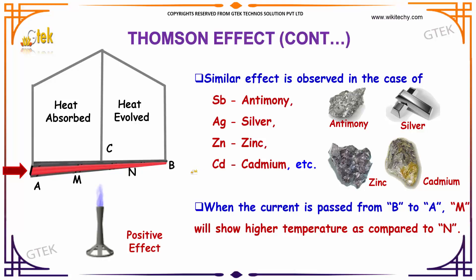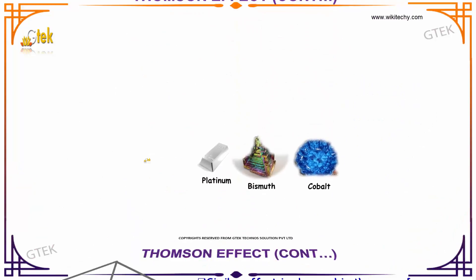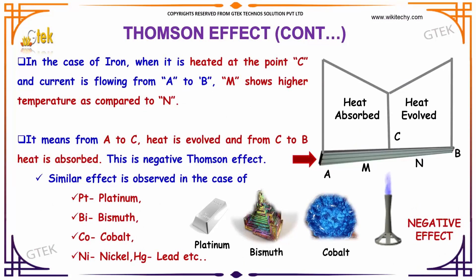When the current is passed from B to A, M will show a higher temperature when compared to N. In the case of iron, when it is heated at point C and current flows from A to B, M shows a higher temperature compared to N. This shows that from A to C heat is absorbed and from C to B heat is absorbed. This is referred to as the negative Thomson effect, and can be observed in platinum, bismuth, and cobalt.